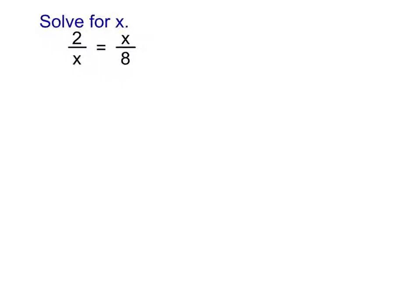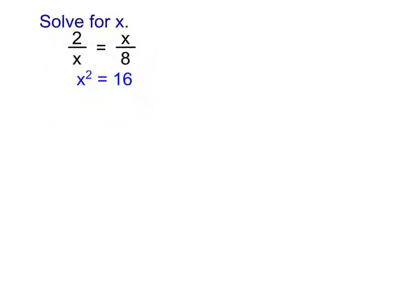Now we're going to tackle something that looks like this — it's got a couple x's in it. We've got a fraction equal to a fraction, so we start the same way: we cross-multiply. When we cross-multiply here, I'm going to be doing x times x. And what is x times x? It's x squared. Every now and then people think 2x — keep that straight. When we multiply the x's, that's where we get the squared. Then you multiply 2 times 8 as well, so that gives us 16. So we have x squared equals 16.